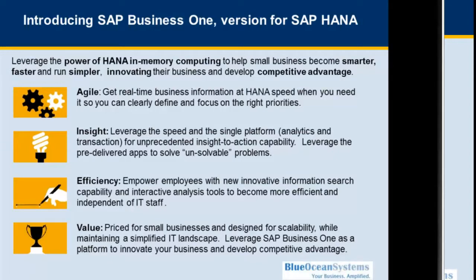One of the business benefits is agility. It helps organizations react more rapidly, which we will demonstrate with the example of Advanced Availability to Promise, or ATP. The HANA environment also provides a platform for greater innovation, greater speed and agility to respond to customer requirements.